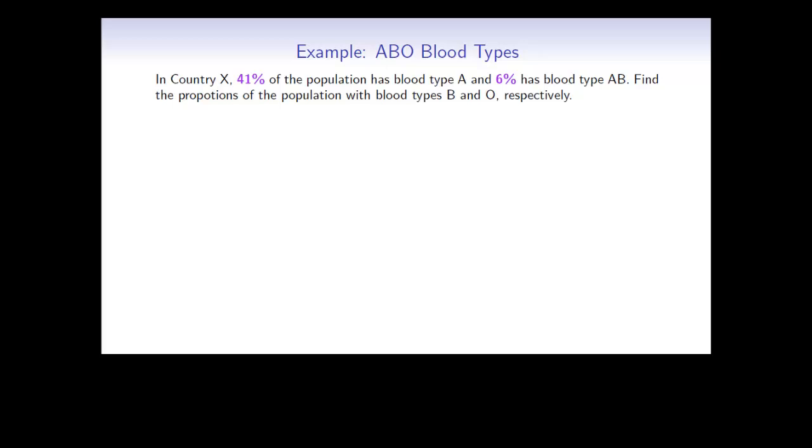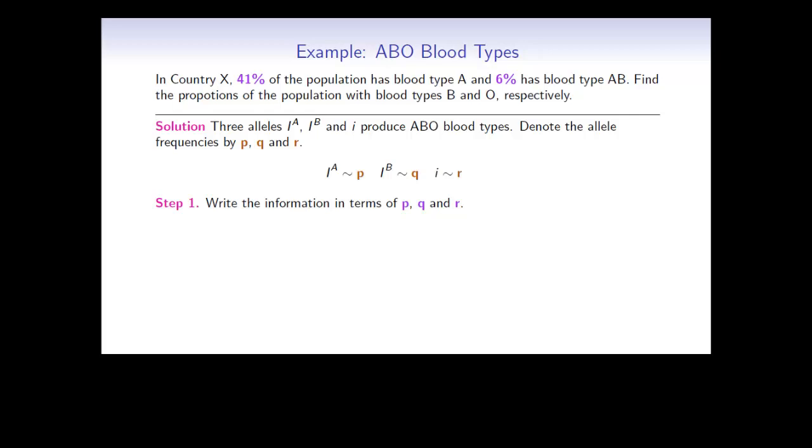Here's an example. Suppose that in country X, 41% of the population has blood type A, and 6% has blood type AB. Find the proportions of the population with blood types B and O respectively. So there are three alleles that produce the ABO blood types: I^A, I^B, and little i. Let's use these lowercase letters p, q, and r to denote the corresponding allele frequencies. The first step would be to write the given information in terms of p, q, and r. Then we would find the values for these frequencies, and finally use these values to find the frequencies of blood types B and O.